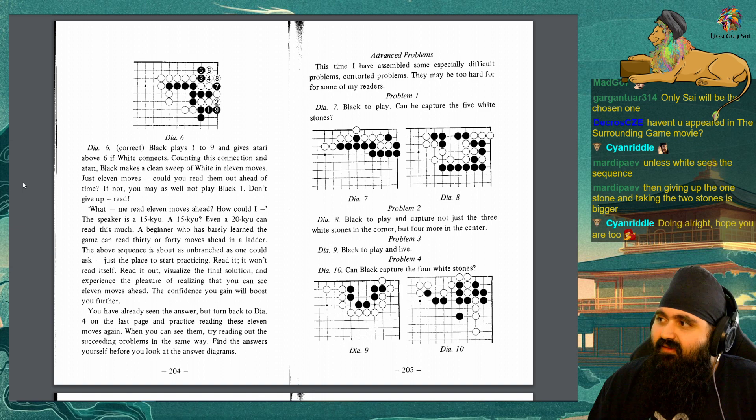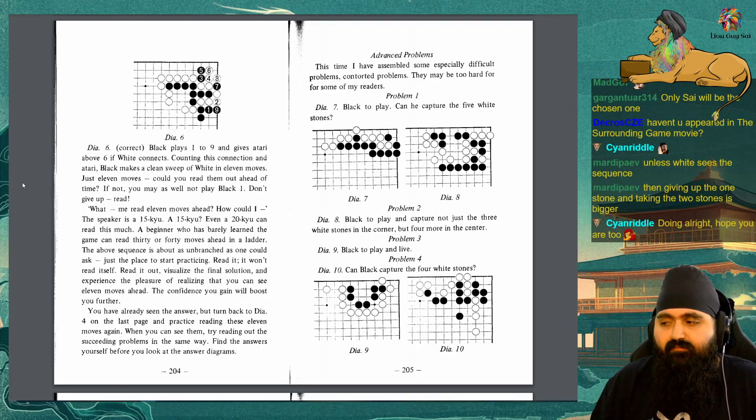Advanced problems: This time I have assembled some especially difficult problems. Contorted problems. They may be too hard for some of my readers. Problem 1, Diagram 7: Black to play. Can he capture the 5 white stones? Problem 2, Diagram 8: Black to play and capture not just the 3 white stones in the corner, but 4 more in the center. Problem 3, Diagram 9: Black to play and live. Problem 4, Diagram 10: Can black capture the 4 white stones?